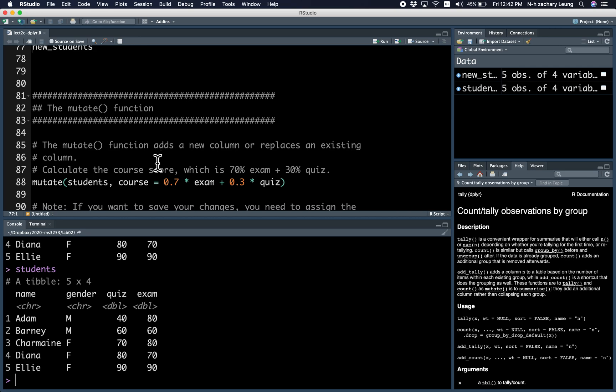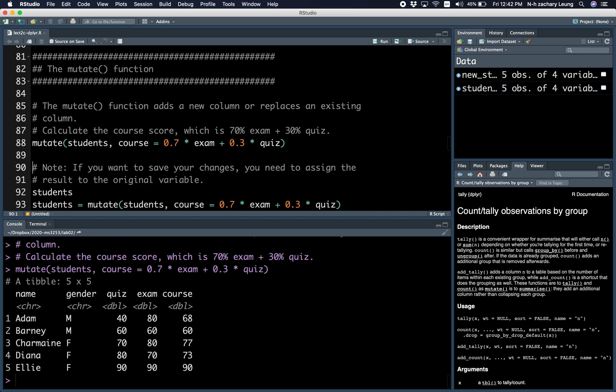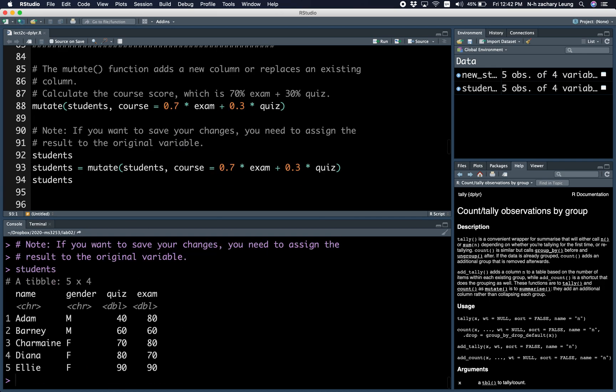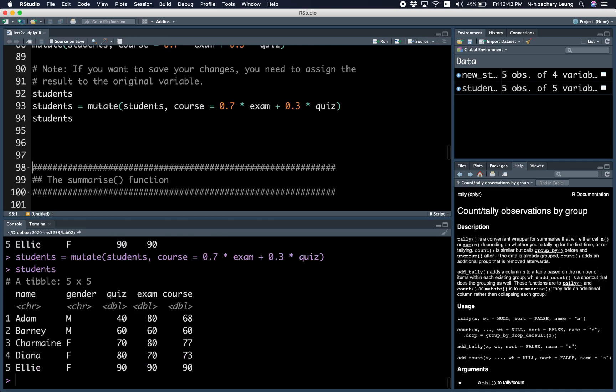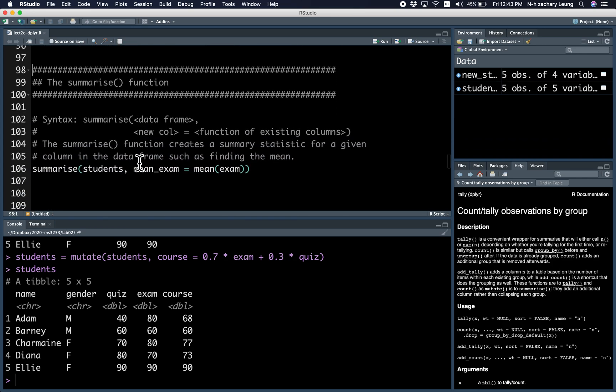The mutate function creates a new column like so. Create the new column for the overall course score. Note that if you want to save your changes to the original data frame, you have to assign the result to the original variable. When I ran this mutate function, the result has five columns, but the original data frame still only has four. So if I save it by writing students equals mutate, then this time I've saved the changes and the students data frame has five columns.